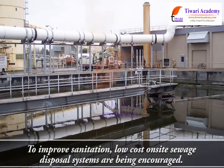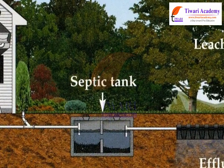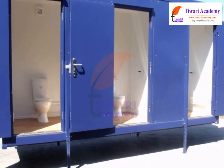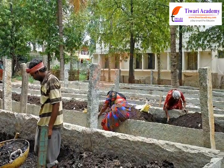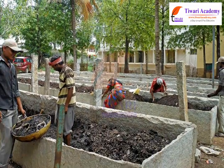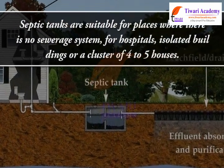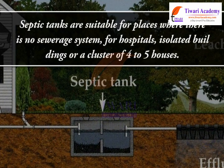To improve sanitation, low-cost on-site sewage disposal systems are being encouraged. Examples are septic tanks, chemical toilets, and composting pits. Septic tanks are suitable for places where there is no sewerage system — for hospitals, isolated buildings, or a cluster of four to five houses.